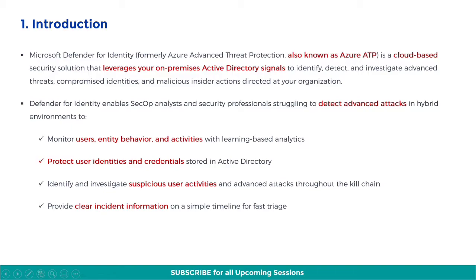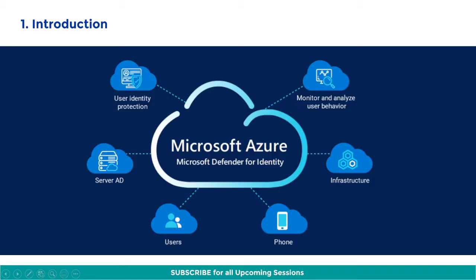It protects user identities and credentials stored in Active Directory, identifies and investigates suspicious user activities and advanced attacks throughout the kill chain, and provides clear incident information on a simple timeline for fast triage. Defender for Identity is a centralized body monitoring user identities across different endpoints — phones, laptops, etc. — and is also very useful to guard against insider threats and insider attacks.